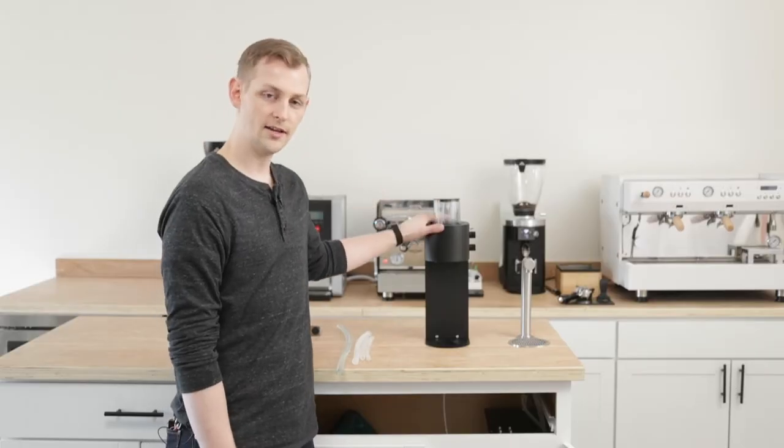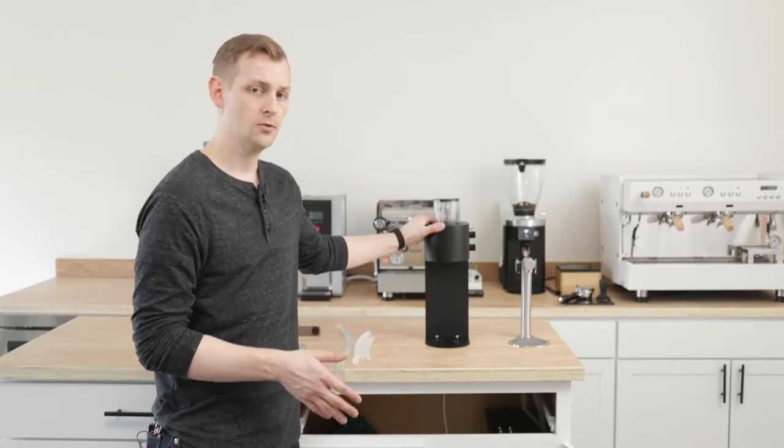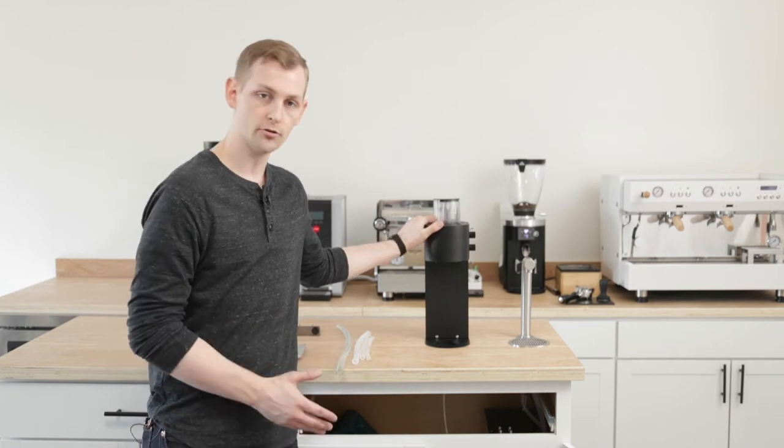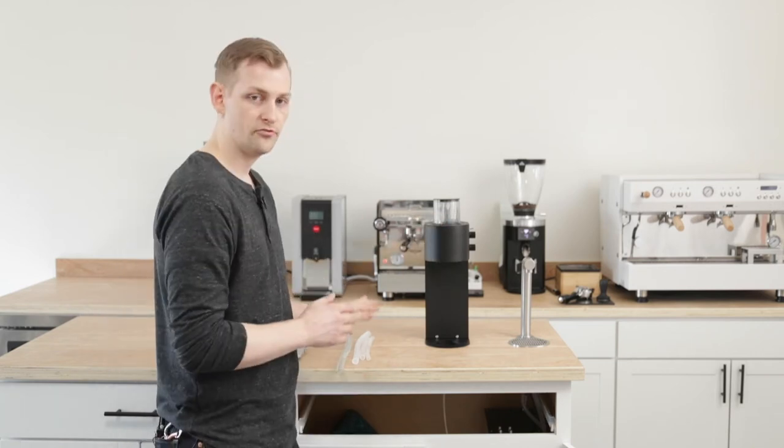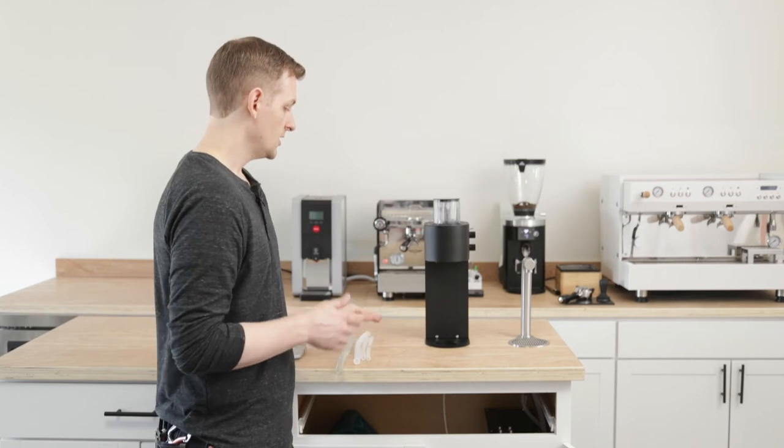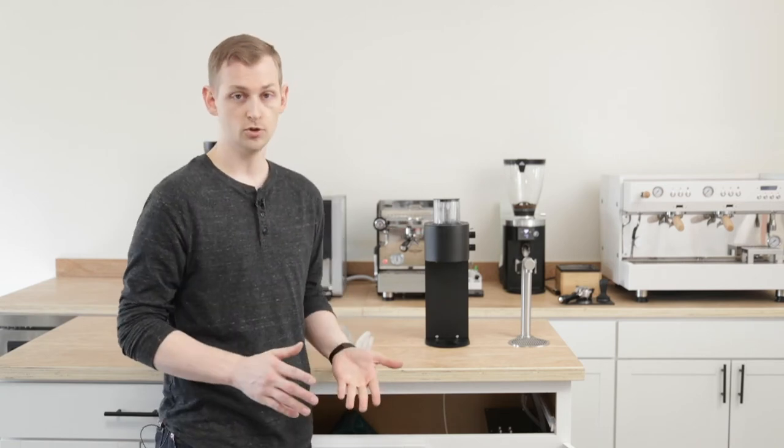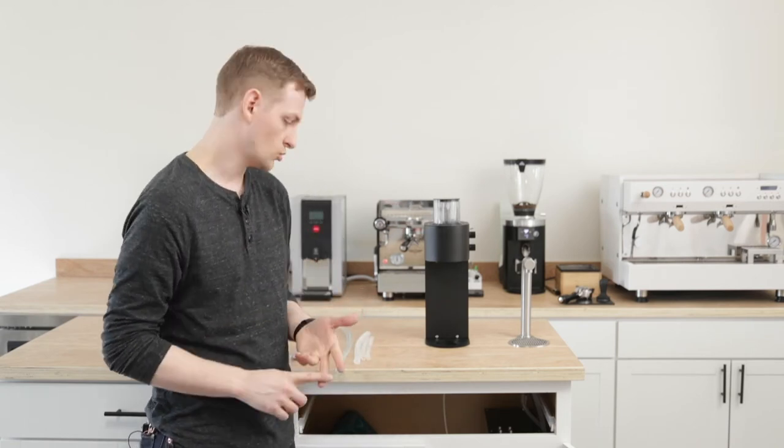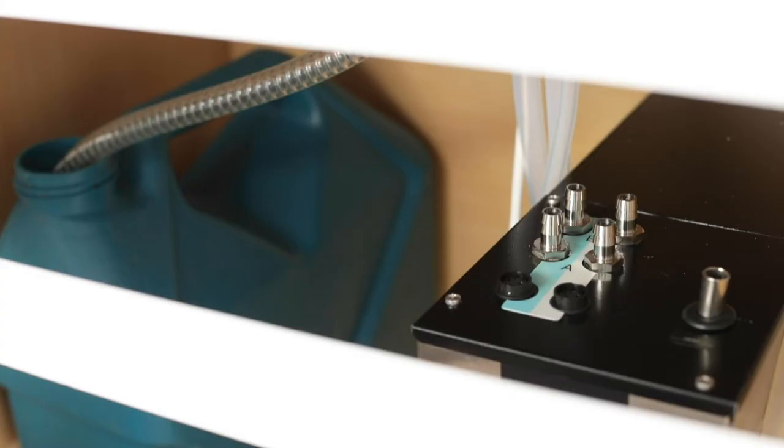Now I've got my SP9 brew head installed into the countertop, which means that I'm ready to hook it up to the under counter boiler. To do that, I have four hoses that I need to hook up. Conveniently, they're all labeled pretty clearly. We have an A and a B, which correspond to A and B on the boiler.